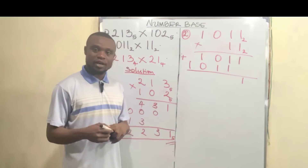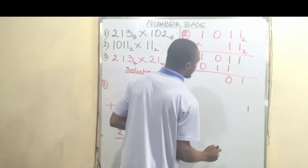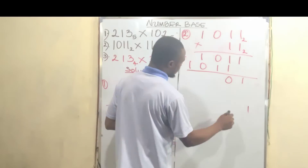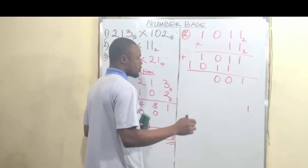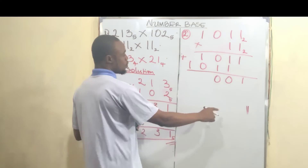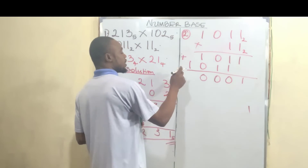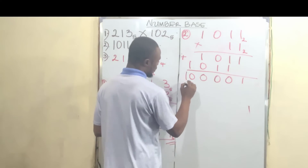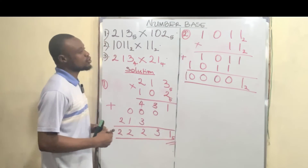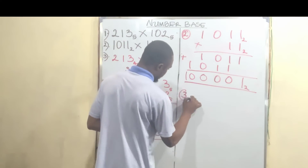1 plus nothing is 1. 1 plus 1 in binary is 10, so write 0 and carry 1. Then 1 plus 0 plus the carried 1 is 10, so write 0 and carry 1. Then 1 plus the carried 1 is 10, write 0 and carry 1. Finally, 1 plus the carried 1 is 10. That is our answer in base 2.